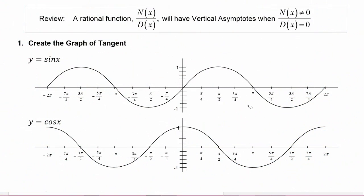First, a quick review: a rational function, which has a numerator function on top and a denominator function on the bottom, will have vertical asymptotes when the denominator function is equal to zero and simultaneously the numerator function cannot be zero. Both of these conditions have to be met for there to be a vertical asymptote.